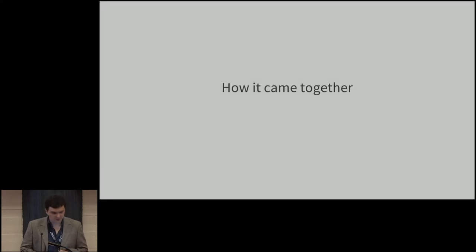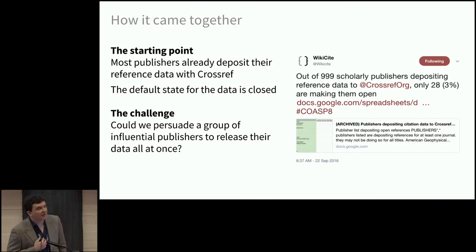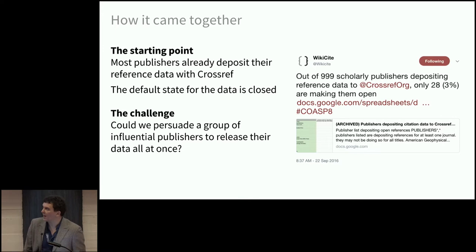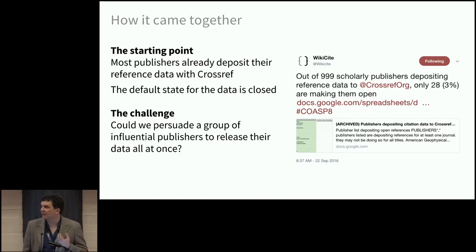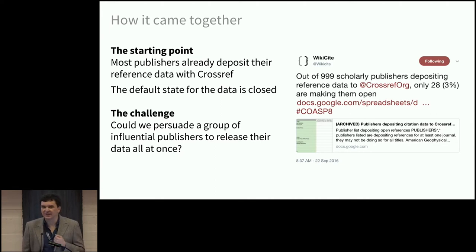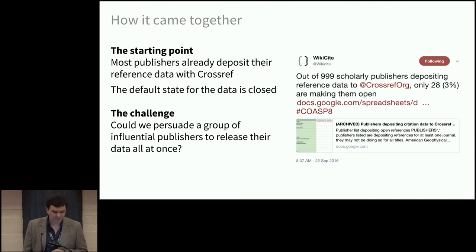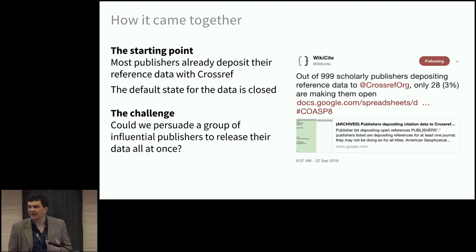How did this come together? It all started with a realization back in September 2016 at COASP, the annual conference of the Open Access Publishing Association — that this data actually existed but was not exposed by default. As it turns out, most publishers deposit to Crossref not just the bibliographic record of publications that have a DOI, but in most cases they also deposit the full reference record. It just turns out that this data is closed by default. We suddenly realized the data already exists — it doesn't require extra effort to be produced.